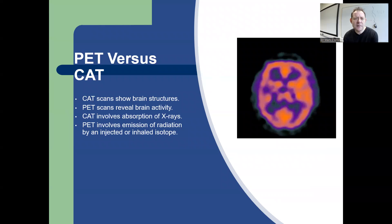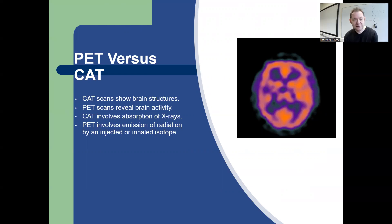Comparing PET with CAT scans: CAT scans show brain structures, whereas PET scans reveal brain activity. CAT involves absorption of X-rays, while PET involves emission of radiation by an injected or inhaled isotope.